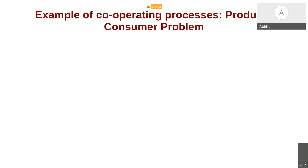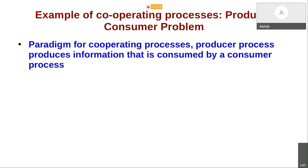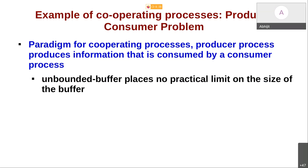One most typical example of cooperating processes is the producer-consumer problem. This is a problem most repeatedly used in OS literature to discuss various problems that operating systems face. In this paradigm, the producer is a process which produces information that is consumed by a consumer process. Because the information produced needs to be consumed, it has to be stored in between using some buffer — a buffer is more like an array, a continuous sequence of bytes.